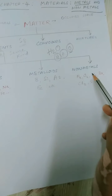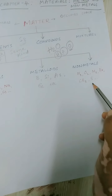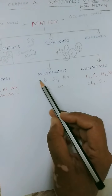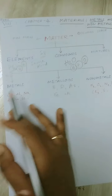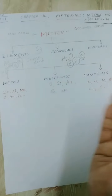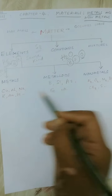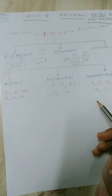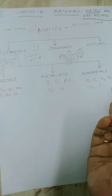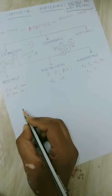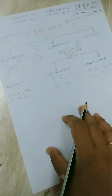Coming to non-metals, we have hydrogen, oxygen, chlorine, bromine, nitrogen, sulfur, etc. Now, what are metalloids? Metalloids are substances which have properties of both metals and non-metals — they are intermediary forms. So based on some physical and chemical properties we can distinguish between metals and non-metals.